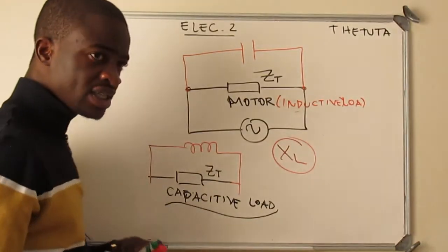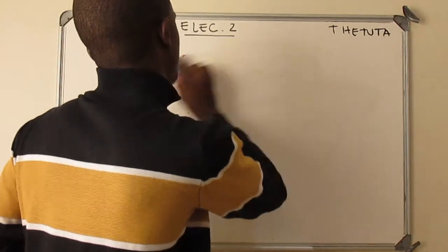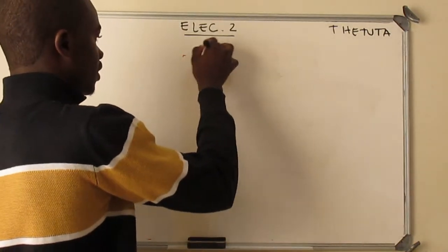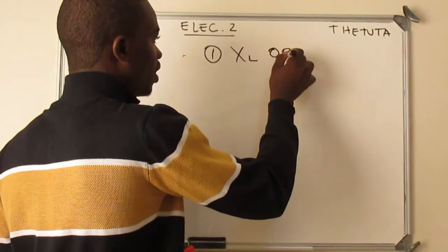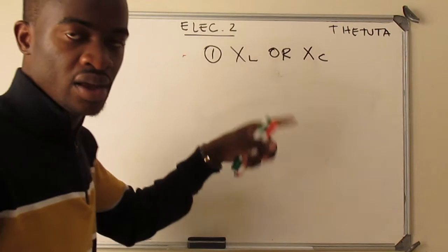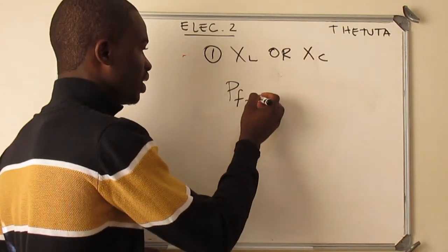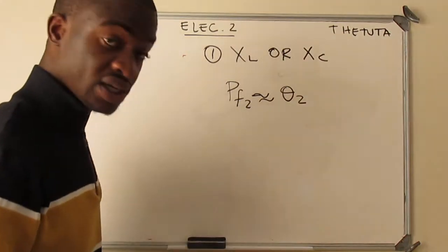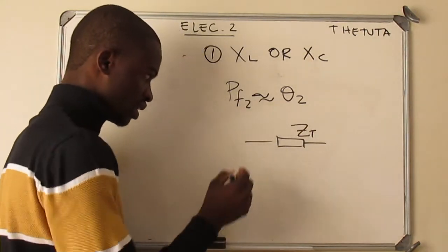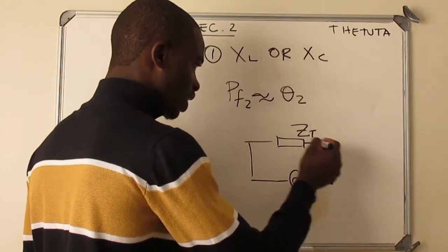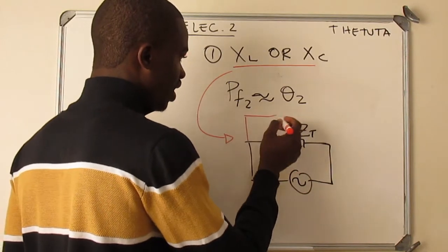We are going to split this into two cases. The first case is when you are given a component that should be connected in parallel with the load — for example, they give us X_L or X_C. In this first case the component is given, and we are looking for the new power factor in the circuit, which is basically the new angle. To do this, we start from the total impedance of the original circuit.